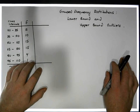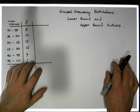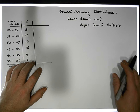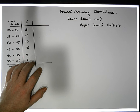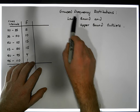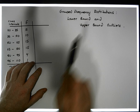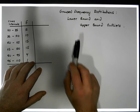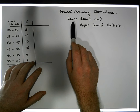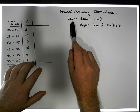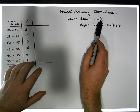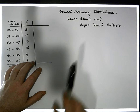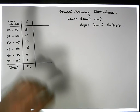Hi guys, this is Jonathan Lambert with the Mathematics Development and Support Service at National College of Ireland. In this short video we're going to be dealing once again with grouped frequency distributions, but this time how to calculate lower bound and upper bound outliers.